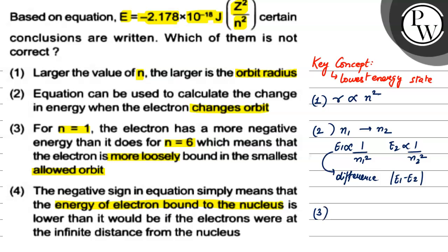Looking at the third option: for N is equal to 1, the electron has a more negative energy than it does for N is equal to 6, which means the electron is more loosely bound in the smallest allowed orbit. Here the option is a wrong conclusion. We can see that for N is equal to 1, the energy is more negative than N is equal to 6. We know that energy is inversely proportional to N square. But the second part is wrong — that the electron is more loosely bound.